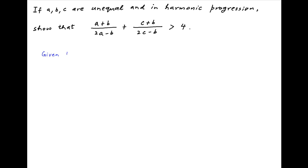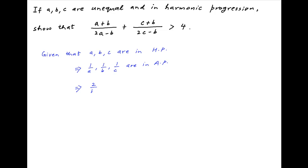We are given that a, b and c are in harmonic progression, which means that 1/a, 1/b, 1/c are in arithmetic progression, and it therefore follows that 2/b is equal to 1/a plus 1/c.